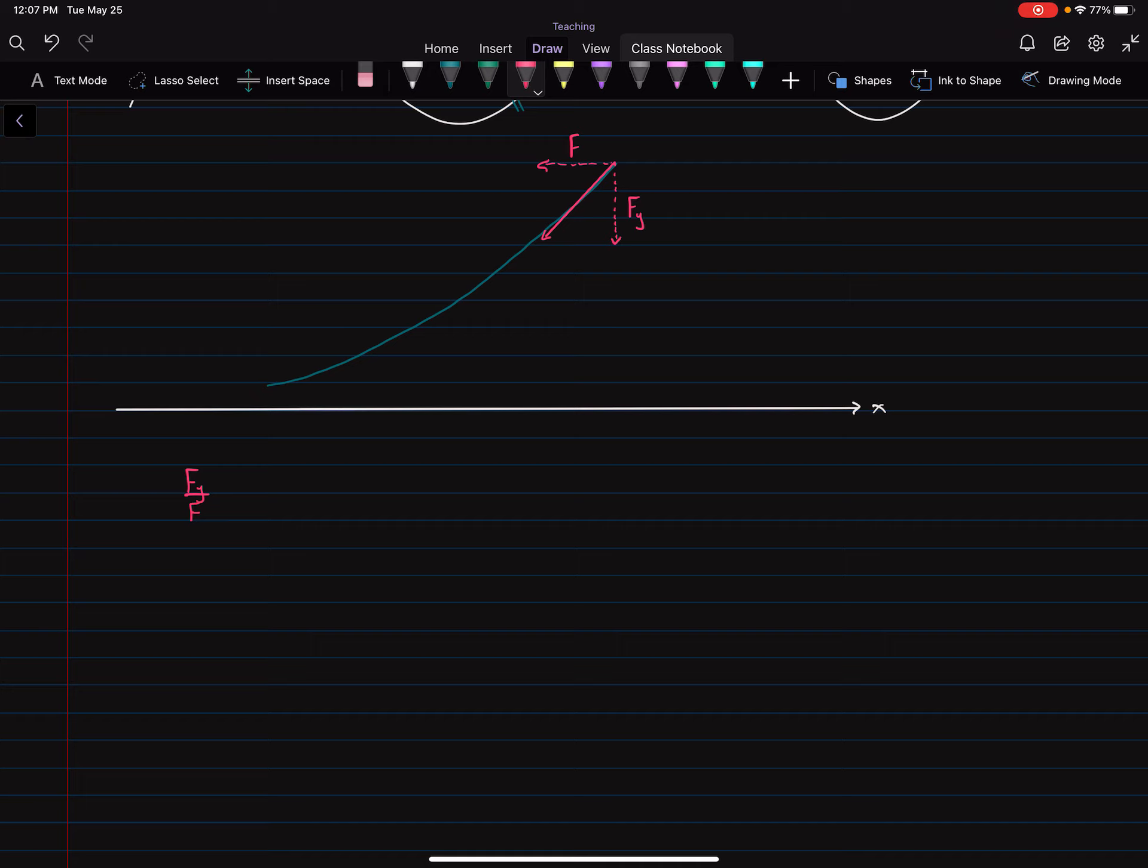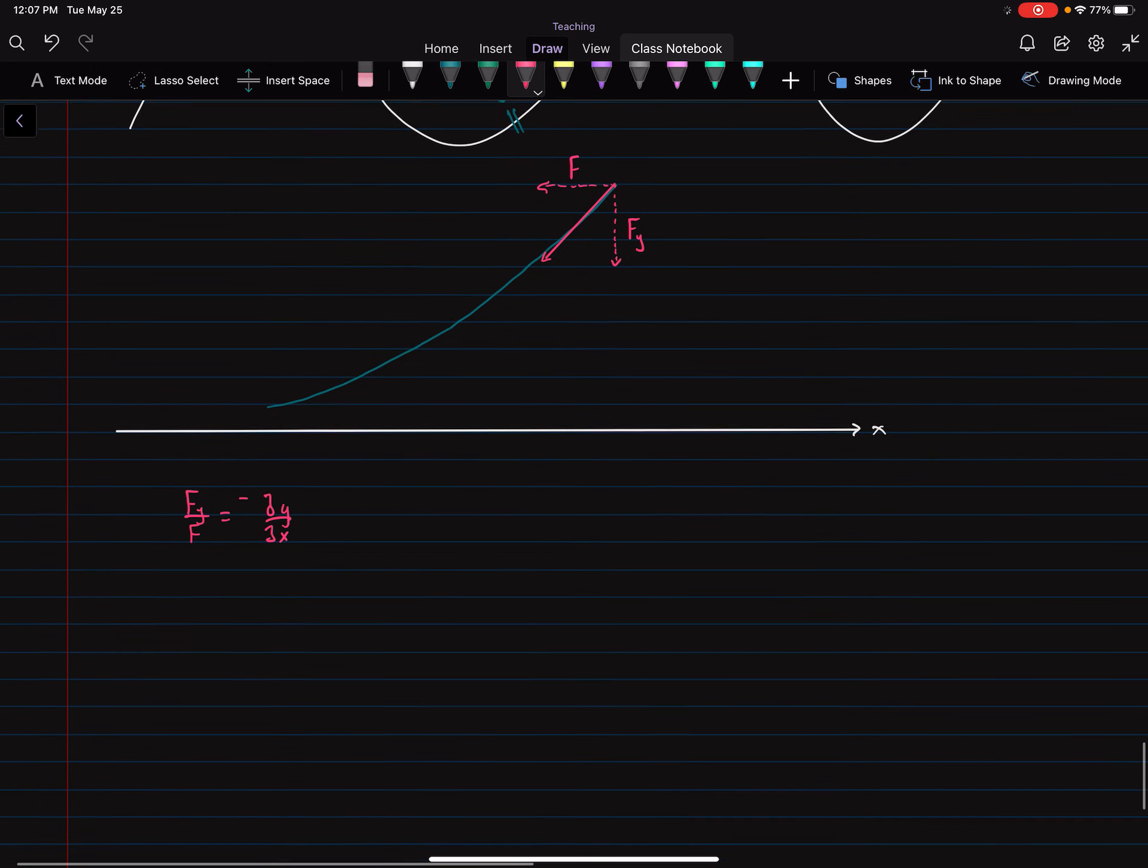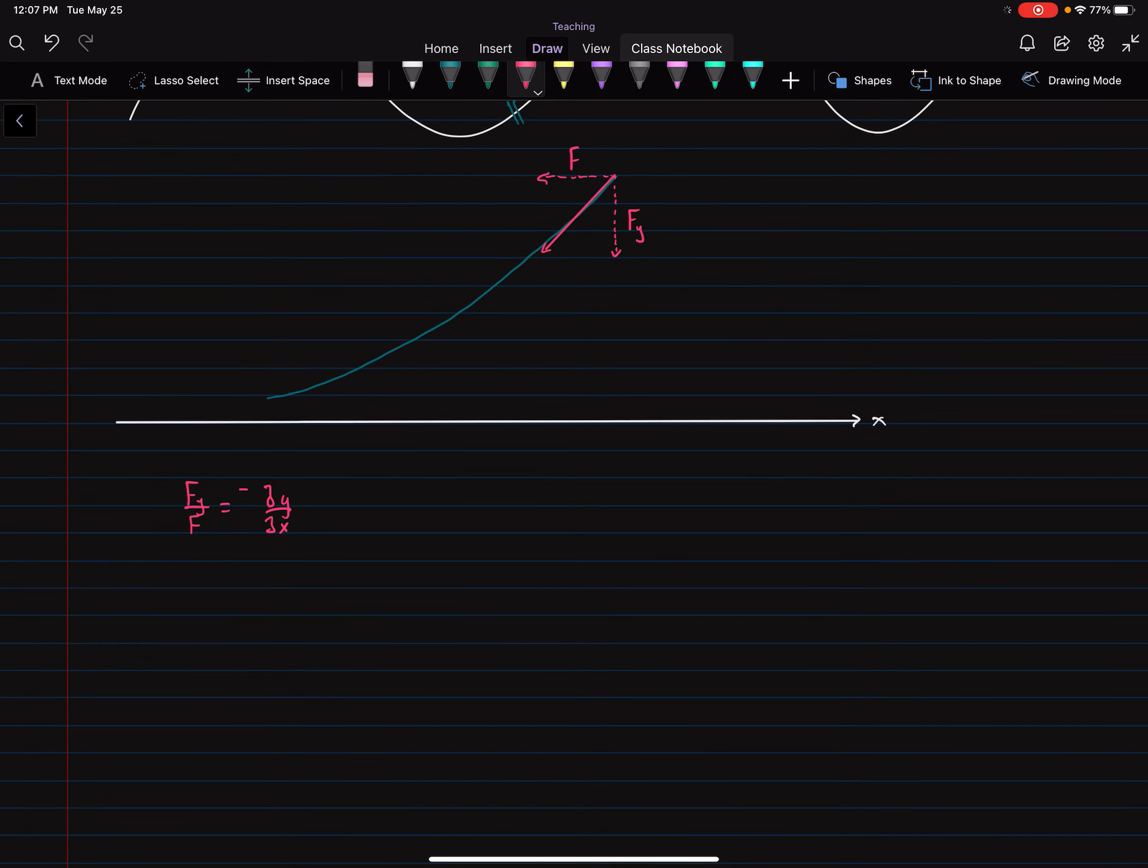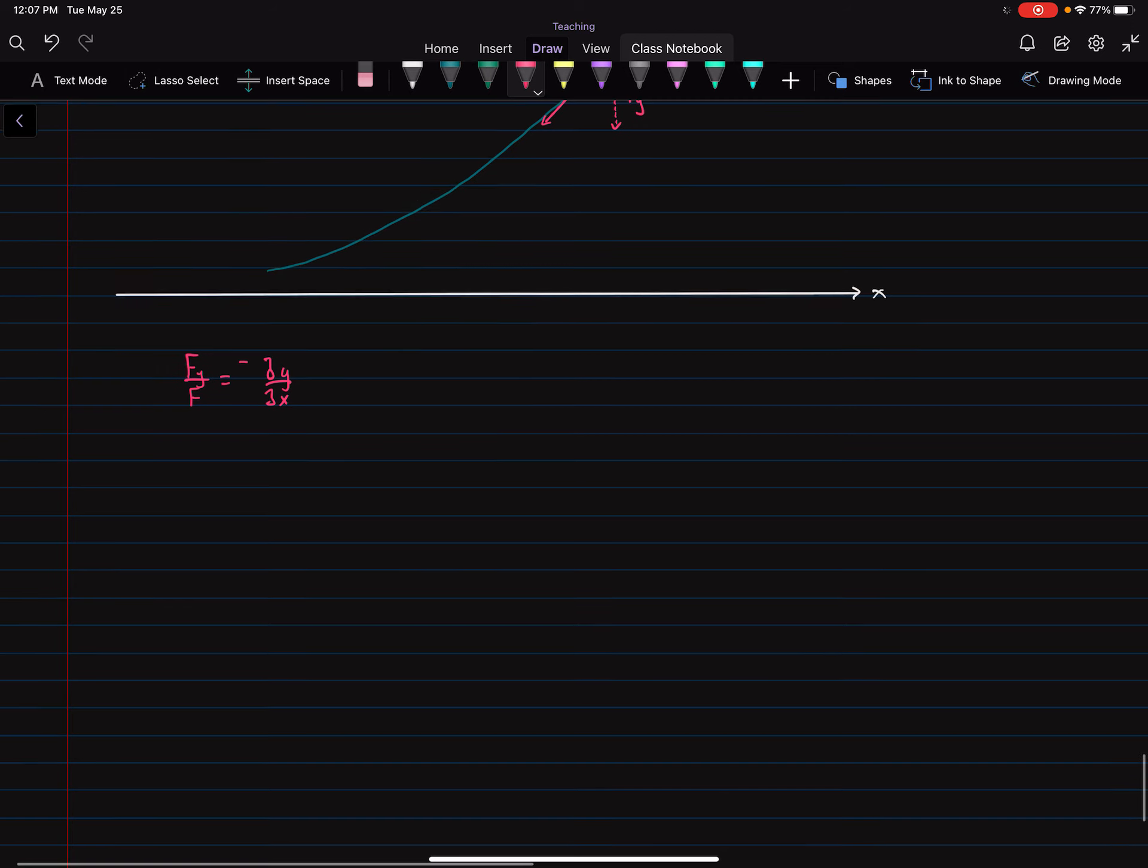And so that would mean that if we said Fy over F, which is rise over run to define the slope, that really would mean a negative slope, but the slope is positive. So if we're using those quantities to define the slope, then we need to stick a negative sign in there to flip it, to say negative dy dx. So it's a very similar thing as what we did before, it's just the force is pointing in a different direction. And we're only considering the right side, because we're just thinking about energy that propagates towards the right.